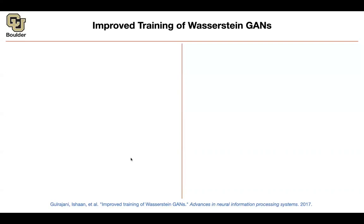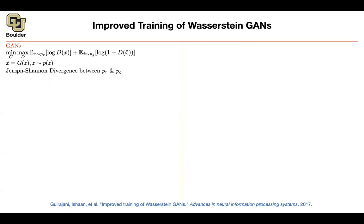Let's recap what GANs was doing. You have a discriminator which is discriminating between real and fake images, and then you have a generator that you're training. X-tilde here is just G of Z, where Z is sampled from a simple distribution. And we learned that this is going to give you the Jensen-Shannon divergence. If you use the original objective, you're going to have trouble converging because it's going to saturate, at least initially during training.